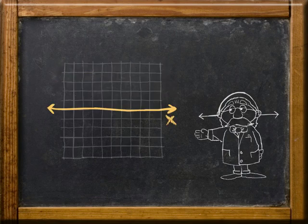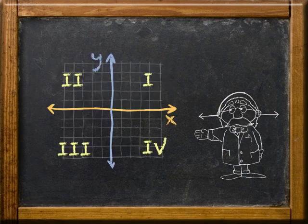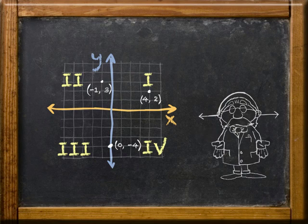You know, the x and y axis, the quadrants, ordered pairs, all that good stuff. Today we'll review concepts from algebra that you're going to need when you start using coordinate geometry.